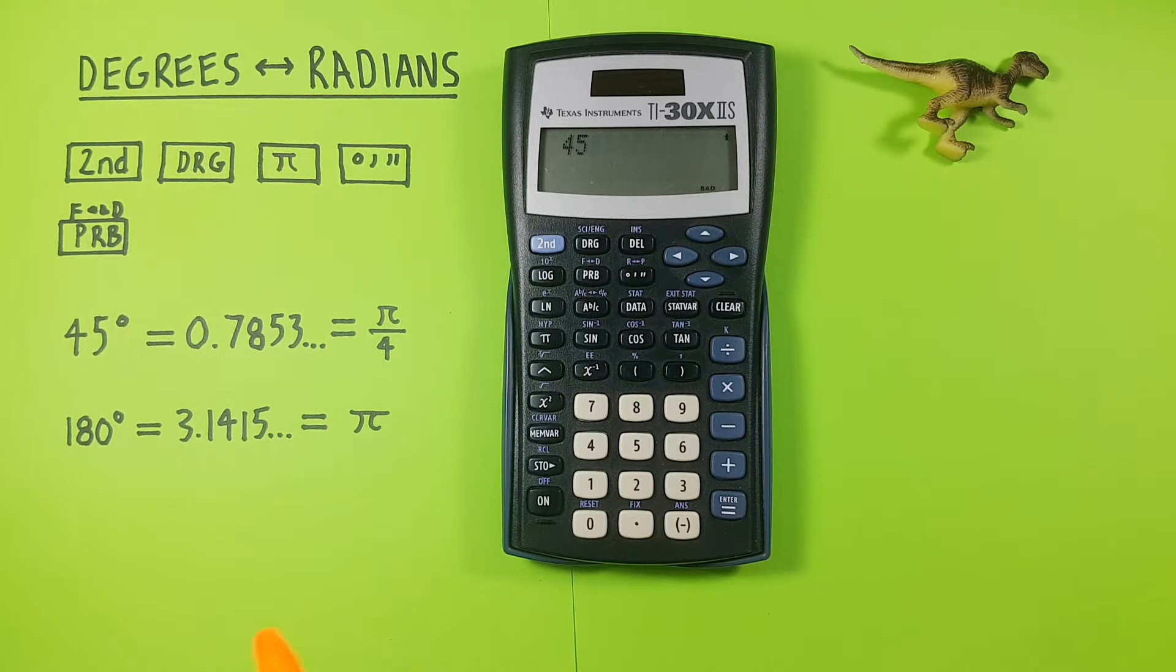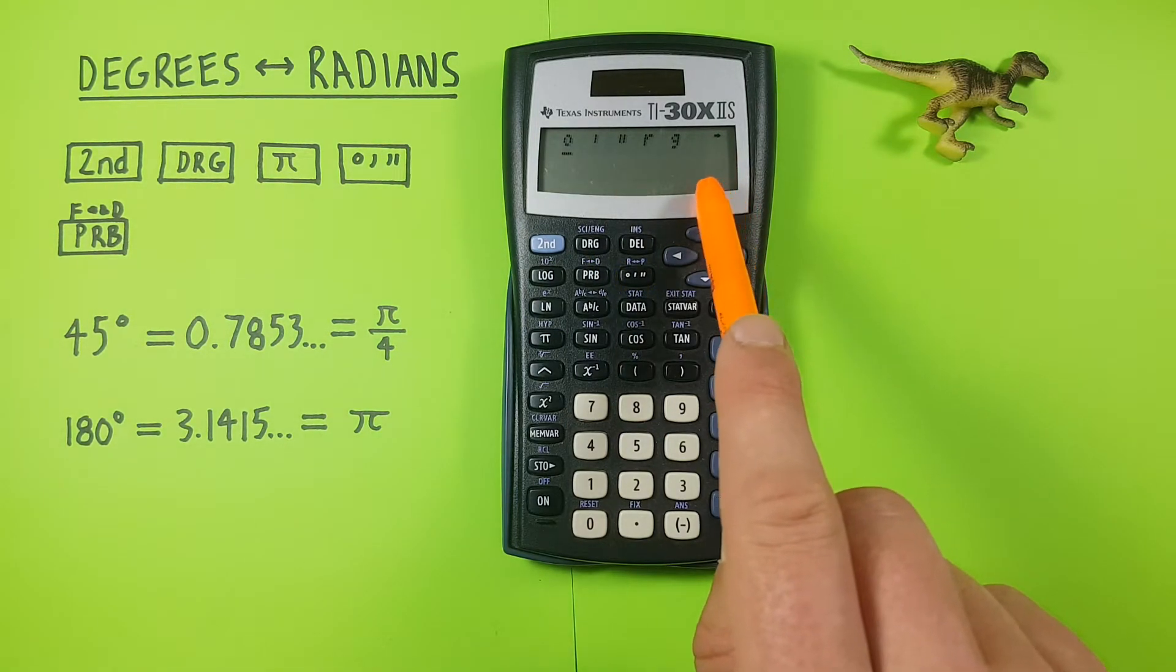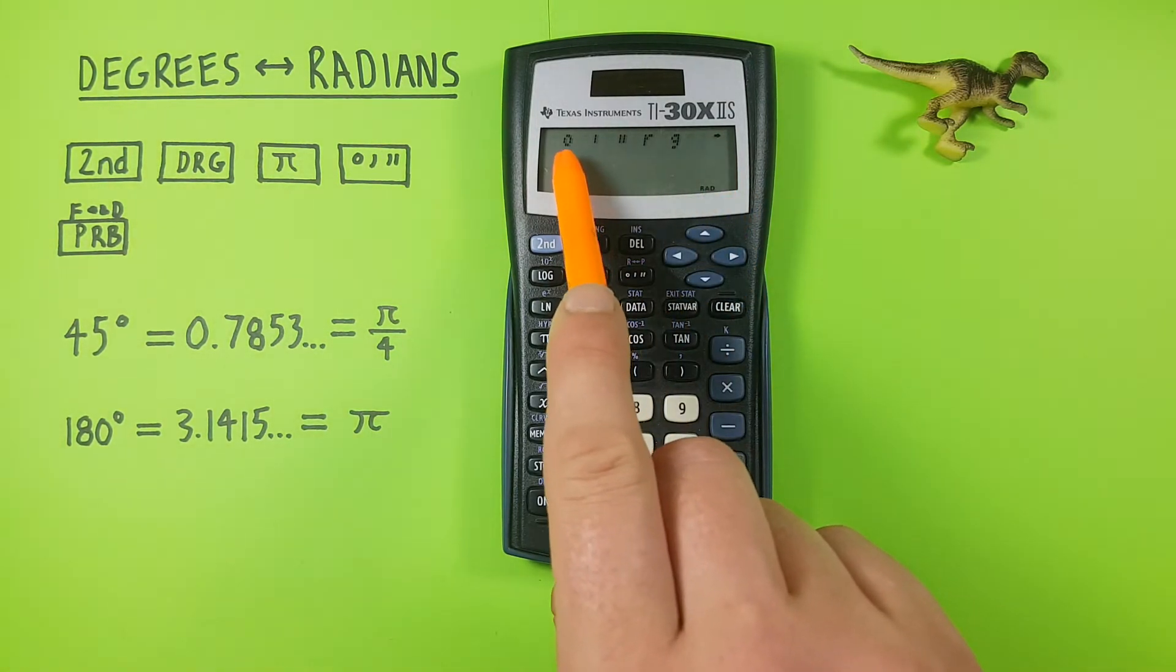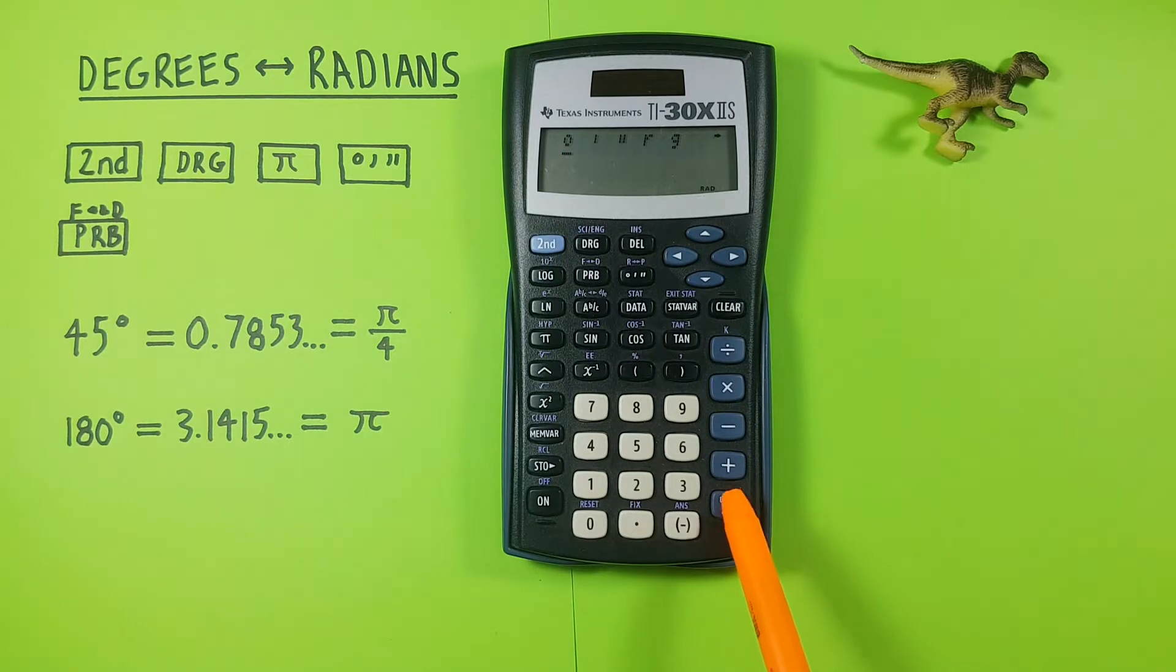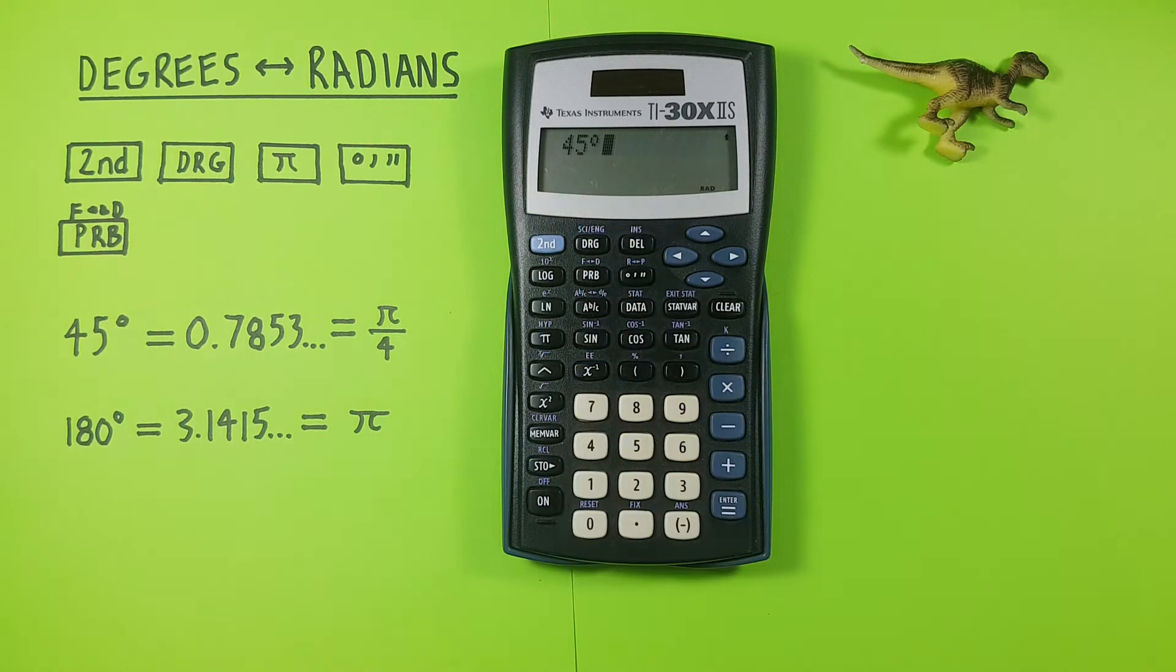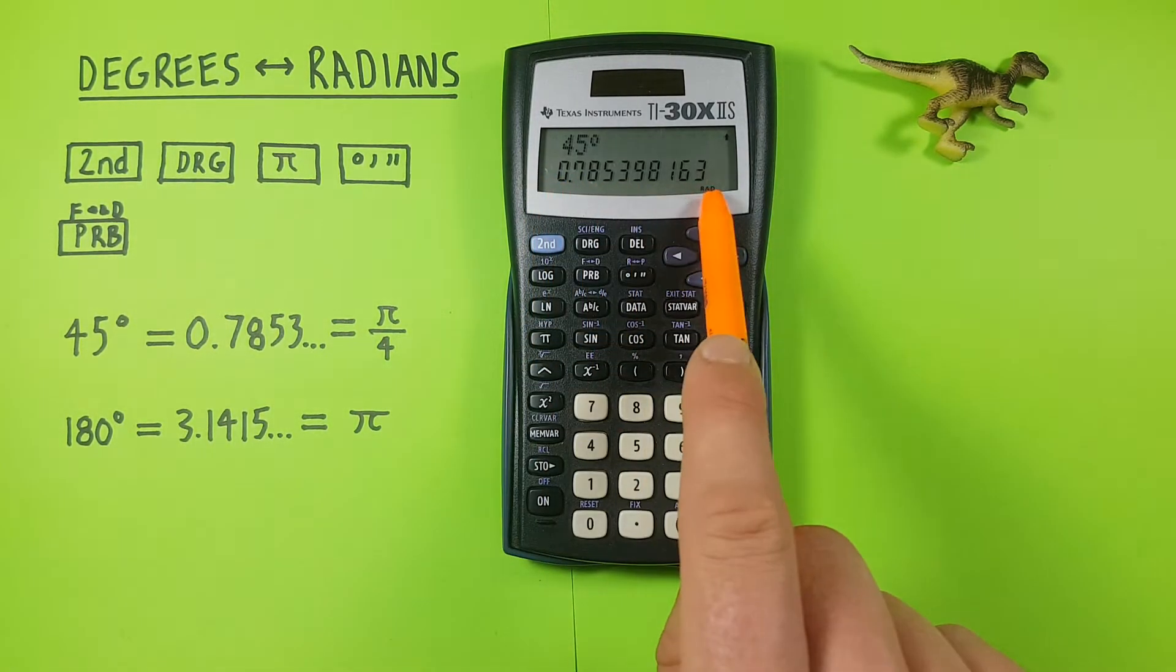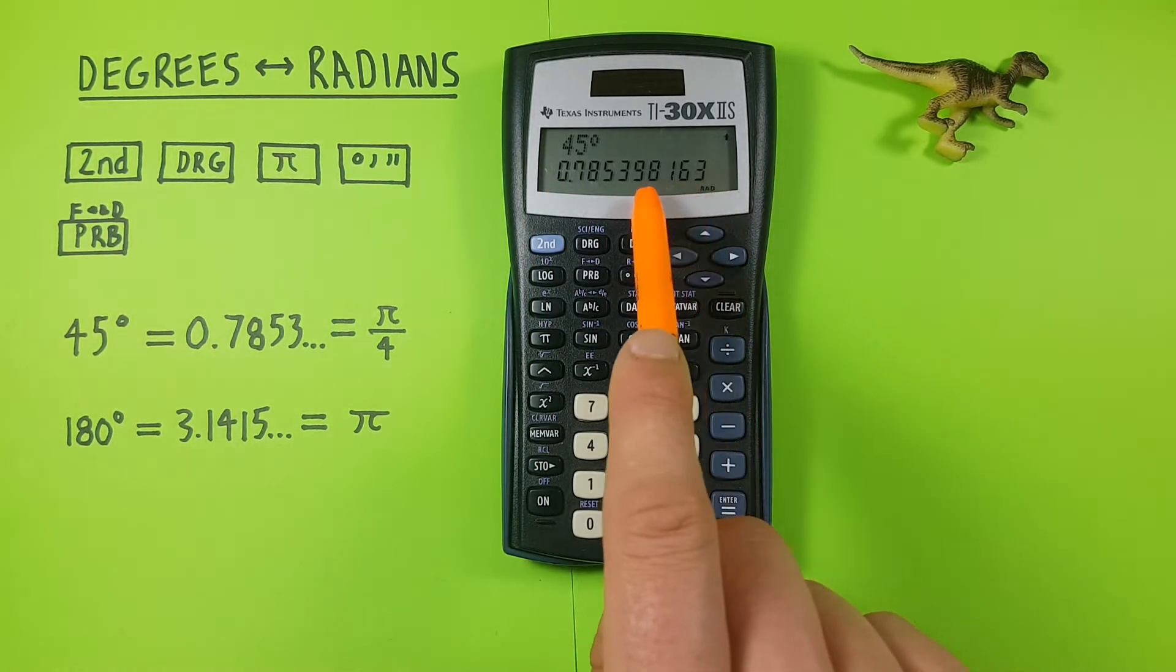To do that we press the degree key which brings us to this menu here and the first option is degrees so we hit enter. Now we have 45 degrees on our screen. If we press enter again we see we get a result in radians in decimals, so that's 0.7853 etc.